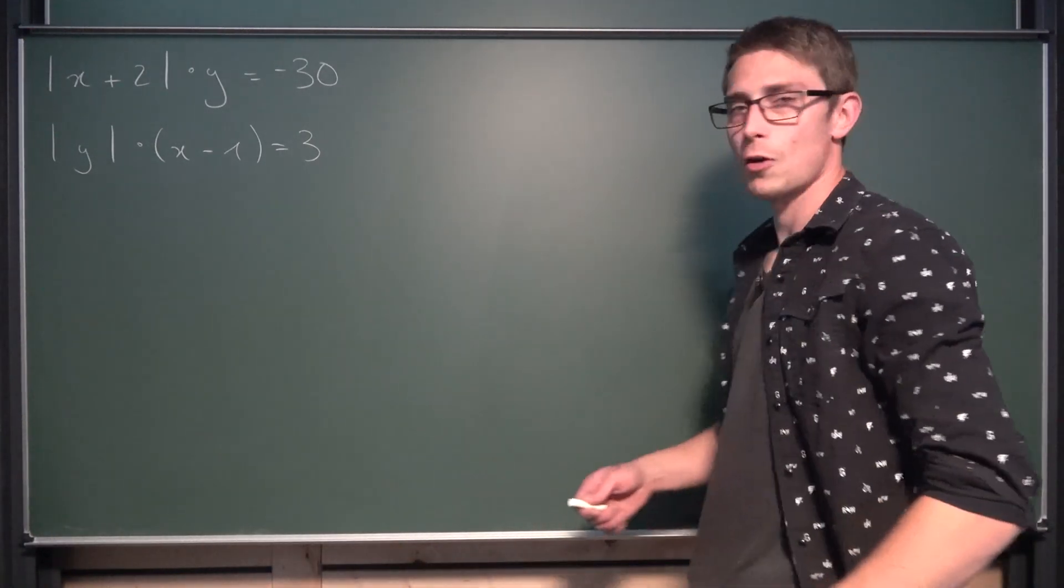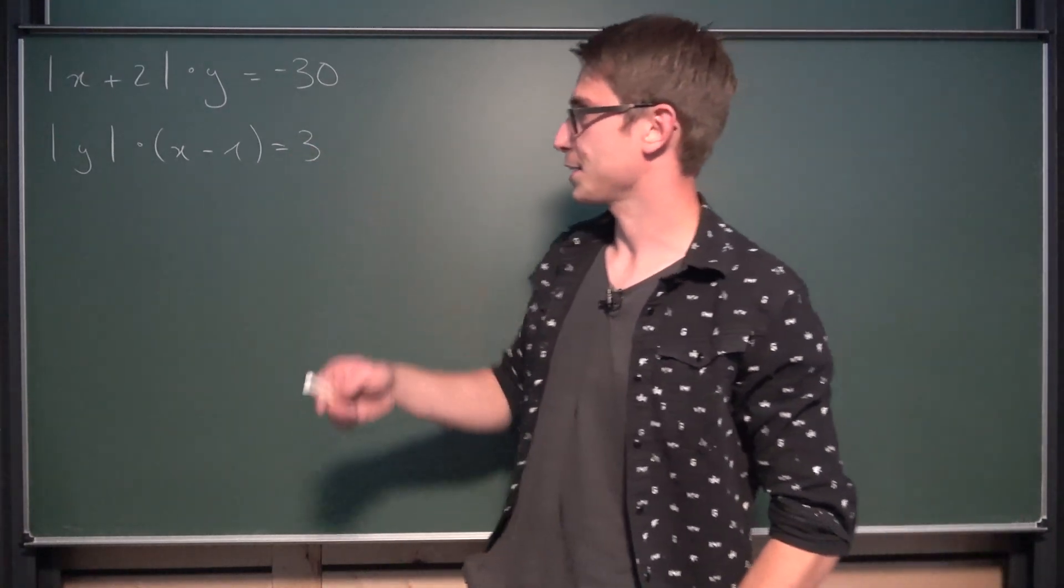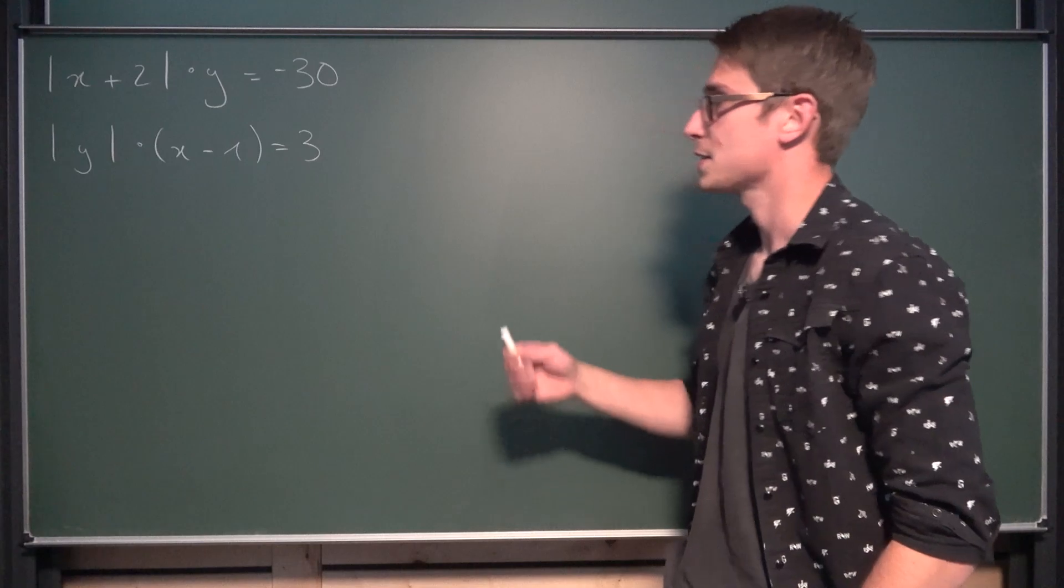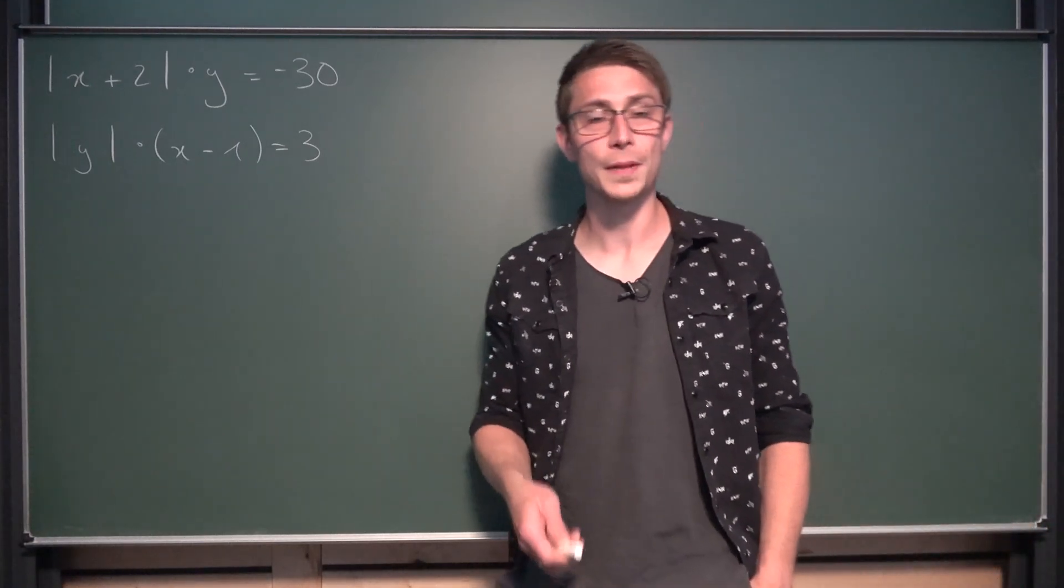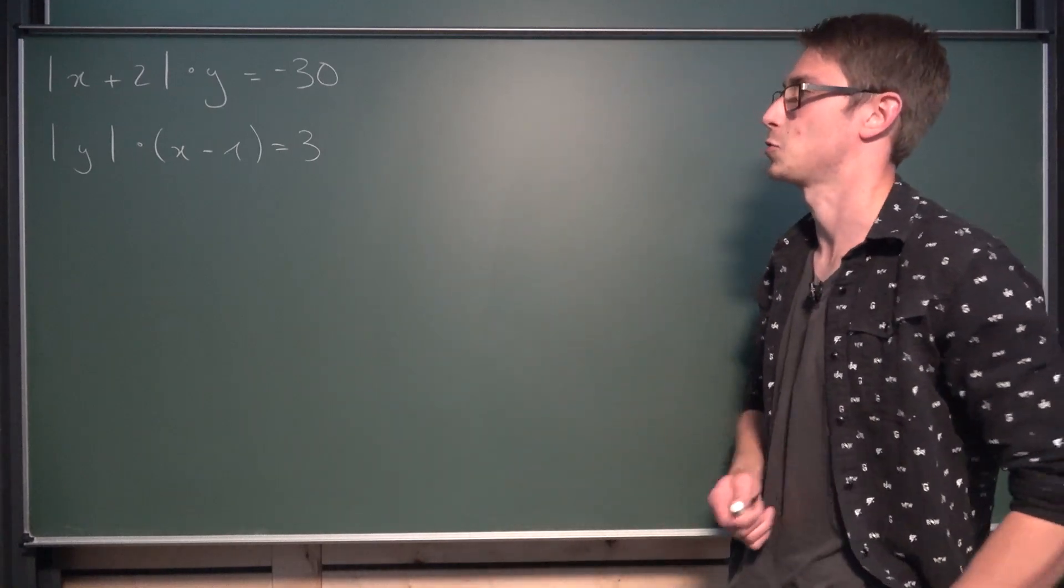We got a system of equations where we have the absolute value of x plus 2 times y is equal to negative 30. And the second equation is absolute value of y times x minus 1 is equal to 3. Try that for yourself and once you're done, post your solution in the comments and then see if you got it right.